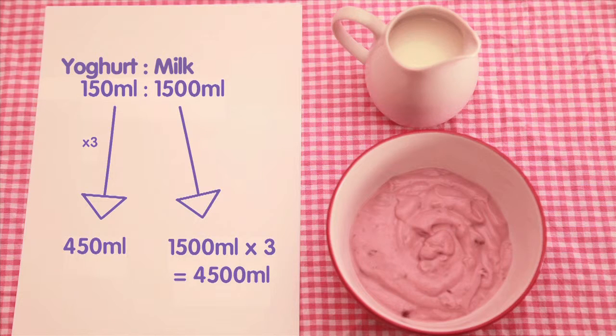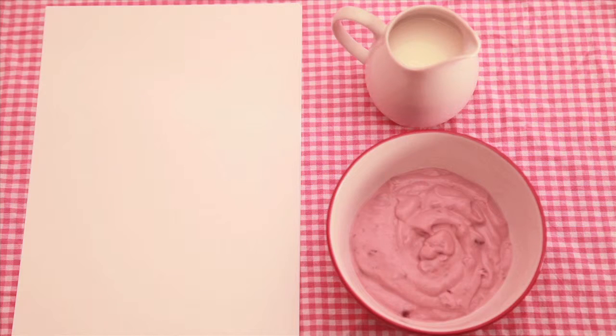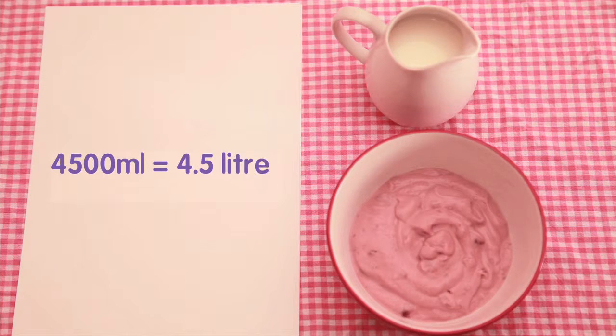So Marian will need 4500 millilitres of milk to make this fruit smoothie. This can also be written as 4.5 litres.